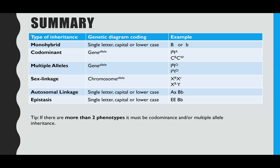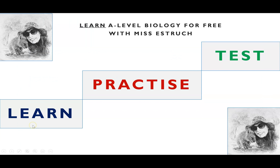Knowing which type of inheritance to use is something students find difficult. With sex linkage, the question will always tell you. For monohybrid, there will only be two possible phenotypes. For codominance or multiple alleles, look at the written information — if there are more than two phenotypes, it must be codominance and/or multiple alleles. That's your top tip: count the phenotypes. If it's two, it's monohybrid; if it's more than two, it's codominance or multiple alleles; and sex linkage will always be stated. For practice questions to test your coding, head over to missesterich.com and go to the Topic 7 inheritance section. I hope you found this helpful — if so, please give it a thumbs up.